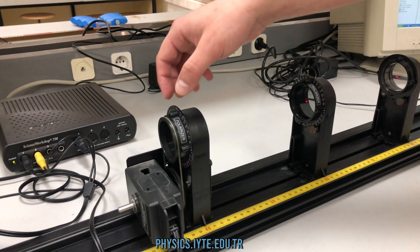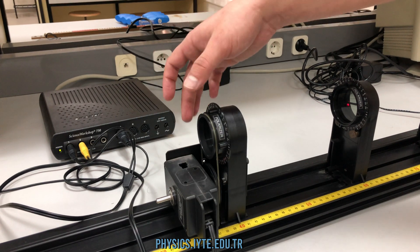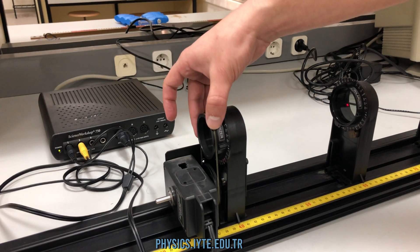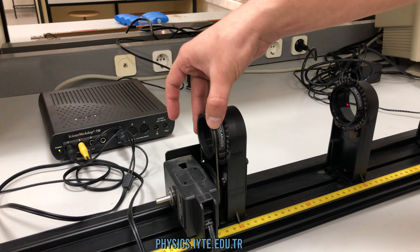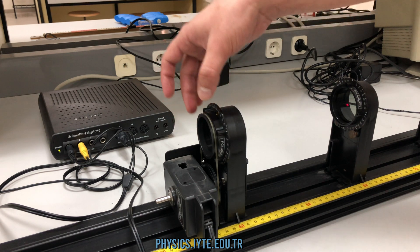The third polarizer is connected to a rotary motion sensor, so that when we change the angle of the polarizer's axis, we can see the change in intensity.